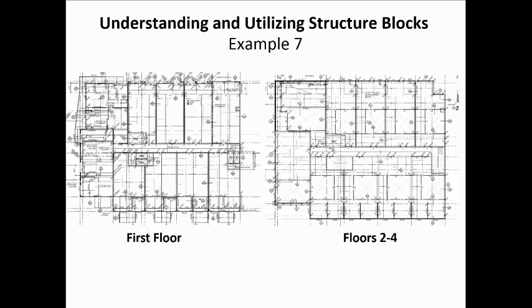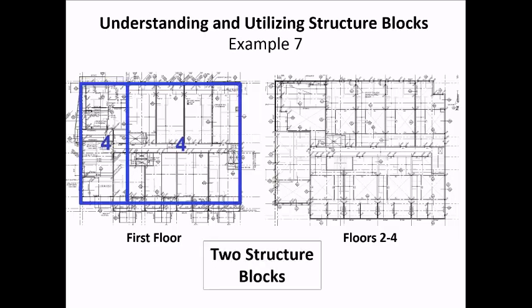How about this four-story building? You can see the first story on the left and stories two to four on the right. The left portion of the structure is irregular in shape, but the right portion is more consistent on each story. For this one, I would recommend two structure blocks: one for the irregular portion and another for the regular portion. Both structure blocks would be specified as four stories.